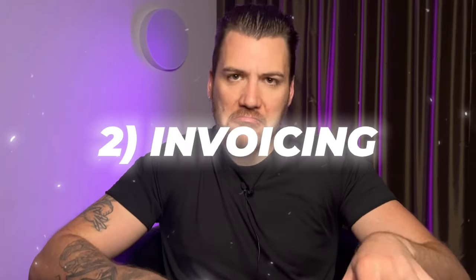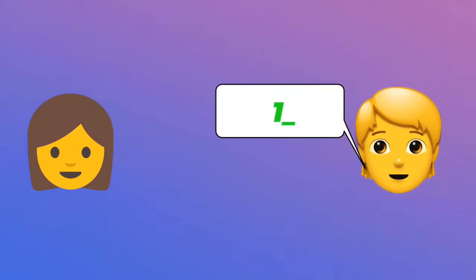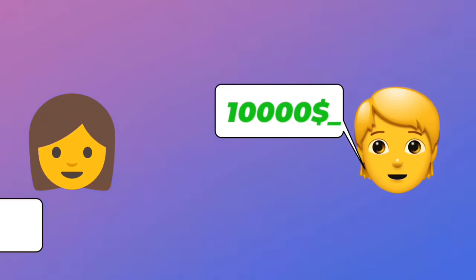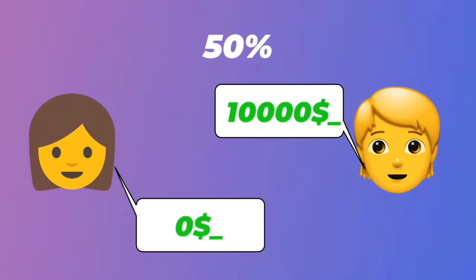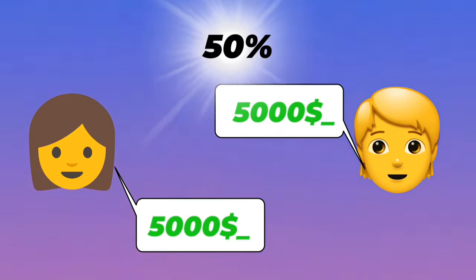The other method is leave everything as is. At the end of the month, you send your invoice to the model saying here's everything your account has earned for the month, here's the percentage we agreed on, minus that, and this is what you're owed — send it to this bank account. That's it. So you have those two methods.